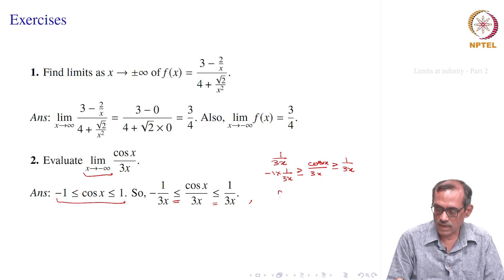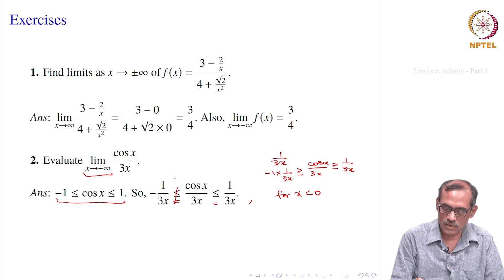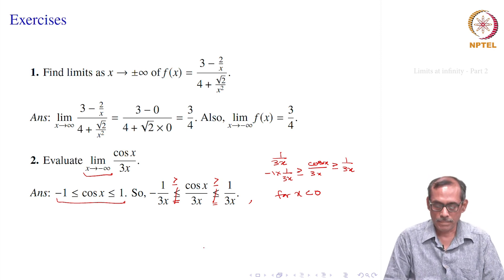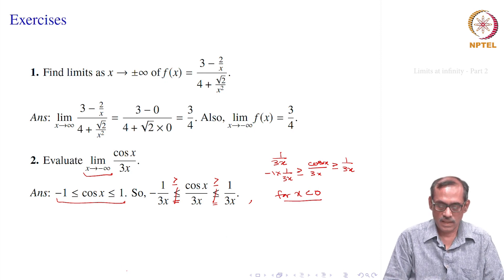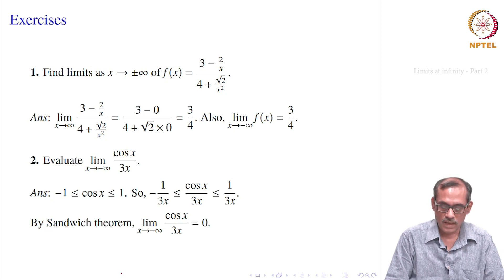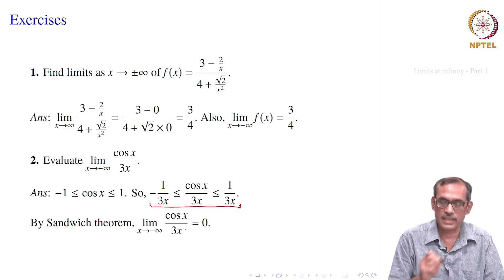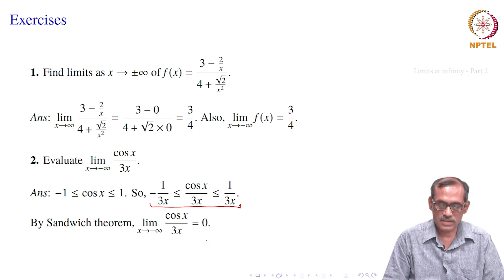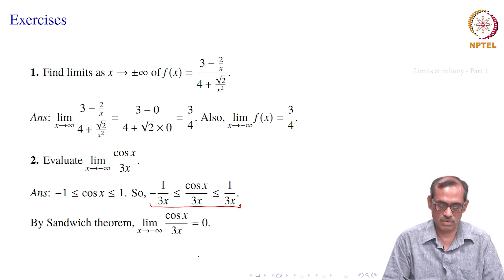For x less than 0, the inequality is replaced by: minus 1/(3x) ≥ cos(x)/(3x) ≥ 1/(3x). Then we apply the Sandwich Theorem: both bounds go to 0, so cos(x)/(3x) equals 0. For x goes to plus infinity as well, the inequality also yields 0. In fact, you can do both at once by taking the absolute value of cos(x)/(3x).